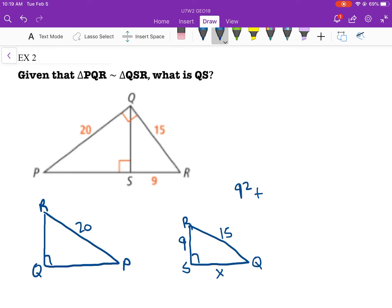9 squared plus X squared equals 15 squared. Evaluate that. 9 squared is 81 plus X squared. 15 squared is 225. 225 minus 81 is 144. If you're a math major, that means that X is equal to 12, also known as QS.